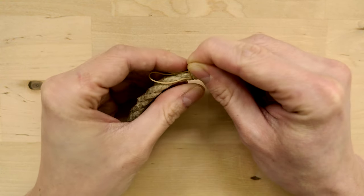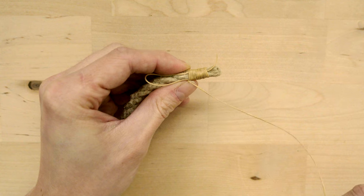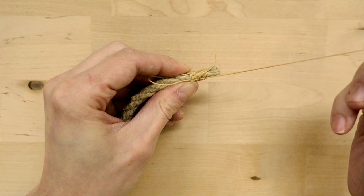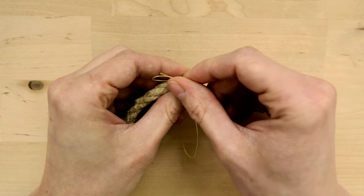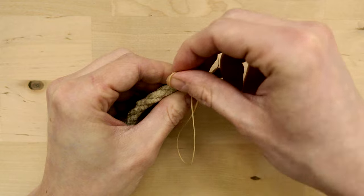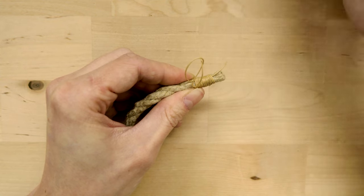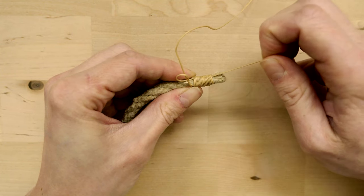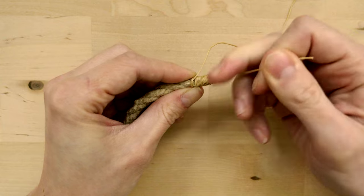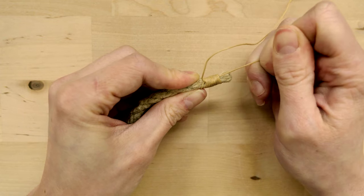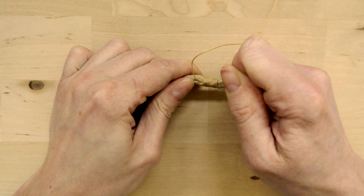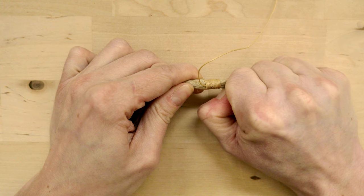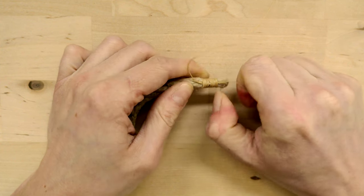Once you have reached the length for your whipping that you would like, take the end of your working end and place it into the loop like this. Pull your end through and then pull in your working end with this end on the right side. You should pull it in at least halfway into your whipping. So about the middle point in your whipping is where the working end should end up.